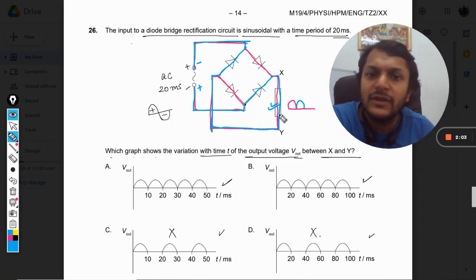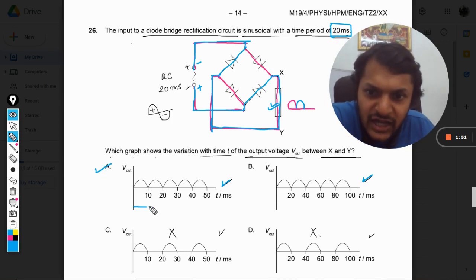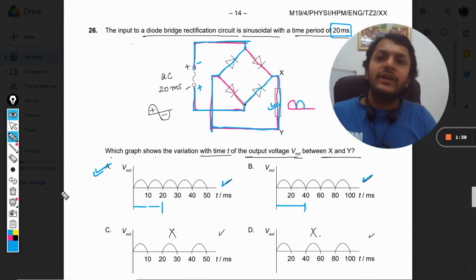So it will be like this. So either it will be A or it will be B that is for sure. But how much is the time period for the complete cycle? 20 microseconds. So A will be the correct answer because this is half and this is half. In 20 seconds the complete cycle is completed but here the total time period is 40 milliseconds. So our answer will be A not B.